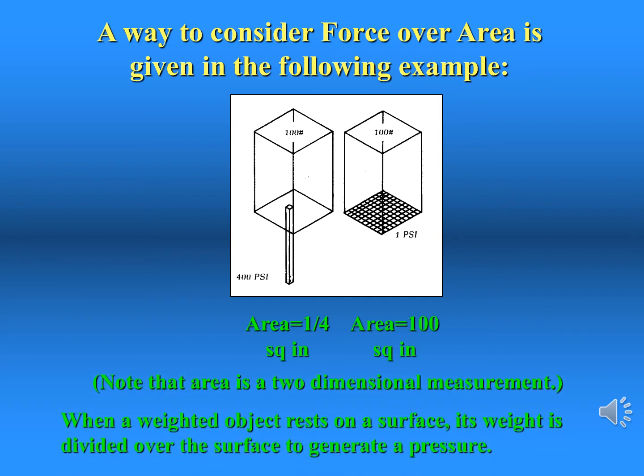This illustration shows how to understand calculating pressure. The block weighs 100 pounds, which in the instance on the left is divided over an area of a quarter inch. A quarter of an inch is 0.25 inches. If you divide 100 by 0.25, you get 400 — that would be 400 psi, or pounds per square inch. Likewise, if the area is increased and the force stays the same, the pressure will go down.